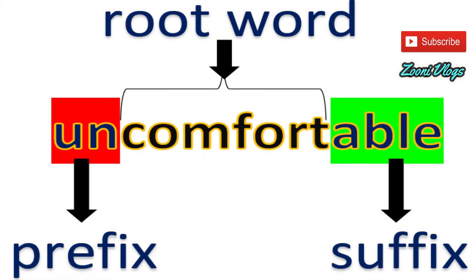For example, we can use the word 'uncomfortable.' The root word here is 'comfort,' and we add the prefix 'un-' to get 'uncomfortable.'